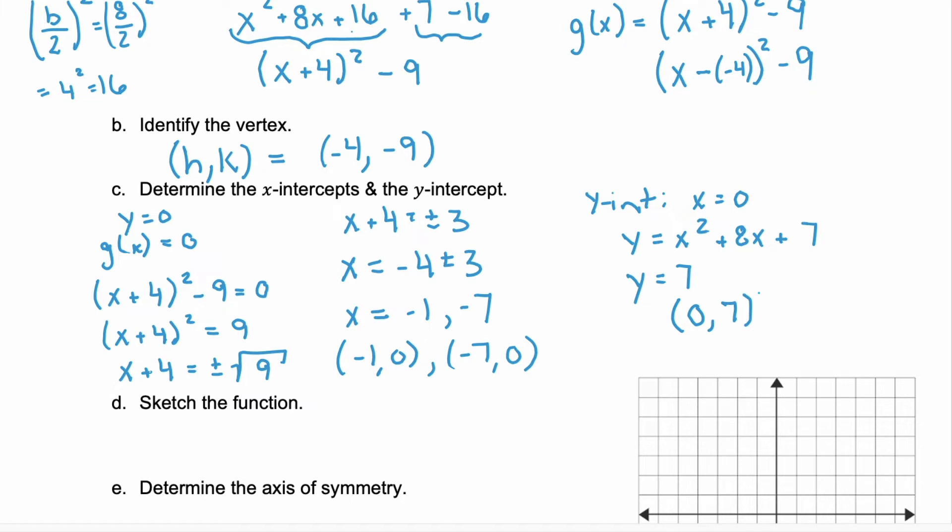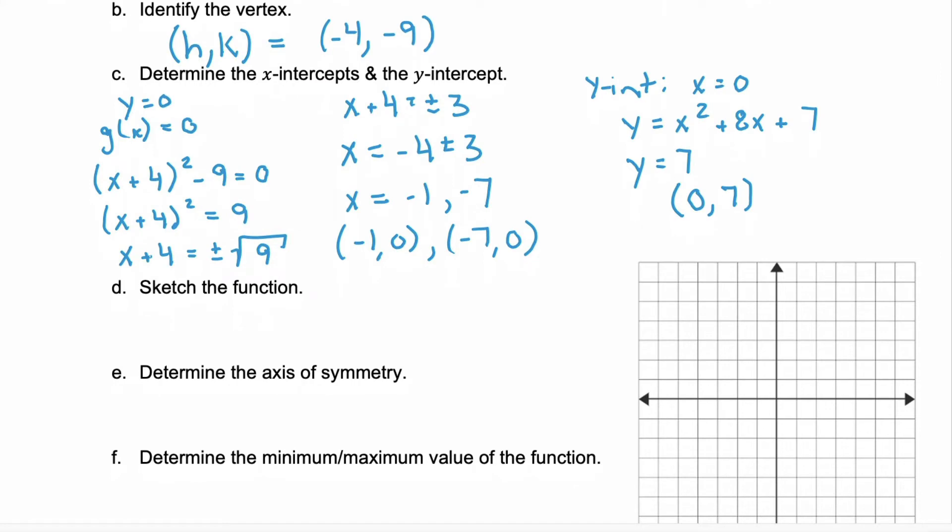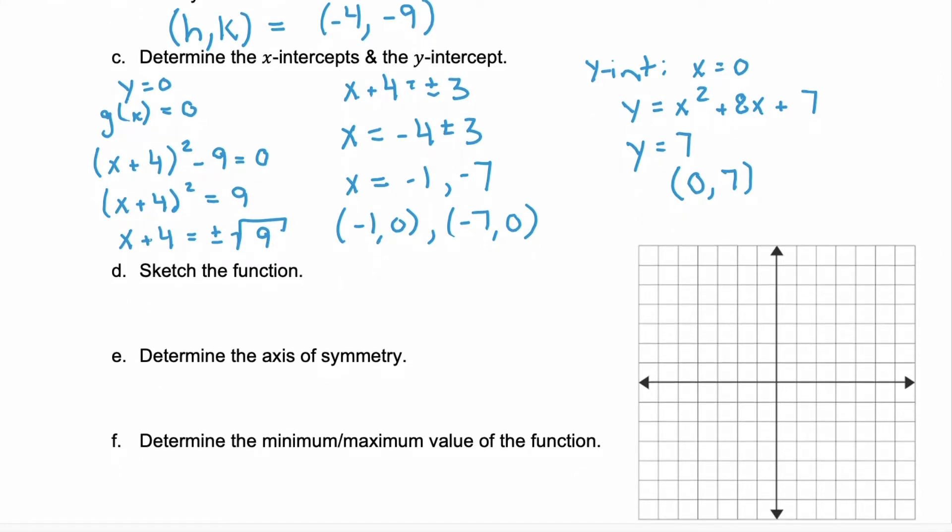Now we have four key points, our vertex, our 2x intercepts, and our y intercept. So in part D, we can use those to sketch our function. I'm going to use a scale of 2 here. So negative 4, then down 2, 4, 6, 8, 9. There's our vertex.